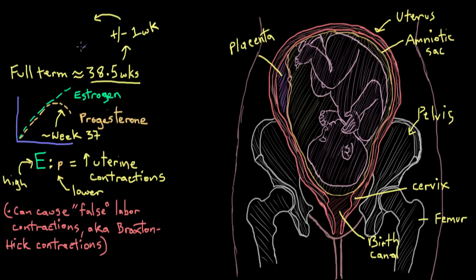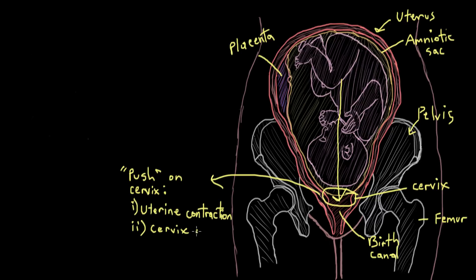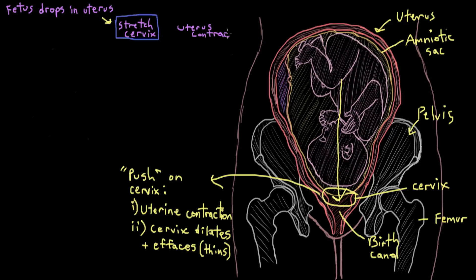So when mom reaches full term, the fetus starts to drop lower in her uterus because it's getting heavier. And when it starts to make contact with and push on the cervix here from the inside, that stimulates both uterine contractions and cervical dilation and effacement or thinning. So let's create a little mechanism here in the corner that we'll continue to work on as we go.